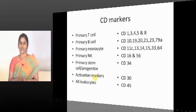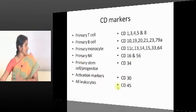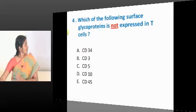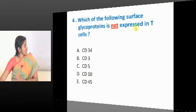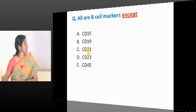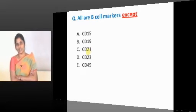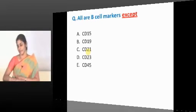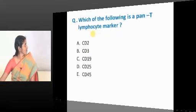The activation marker is CD30, and all leukocytes express CD45. Among the listed CD markers, CD15 is not a B cell marker. CD19, CD21, and CD23 are B cell markers. CD45 is a marker present in all lineages — all leukocytes — so B cells will also express CD45, though it is not lineage-specific. The answer is CD15.